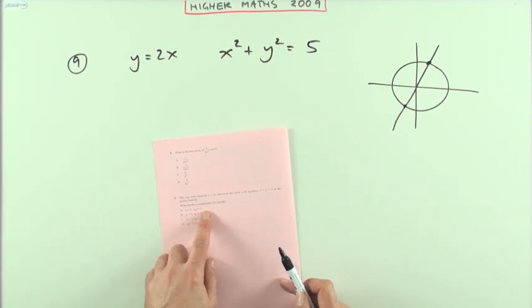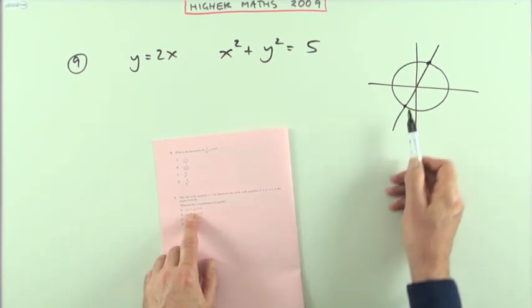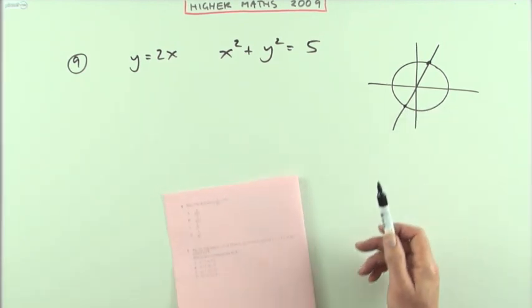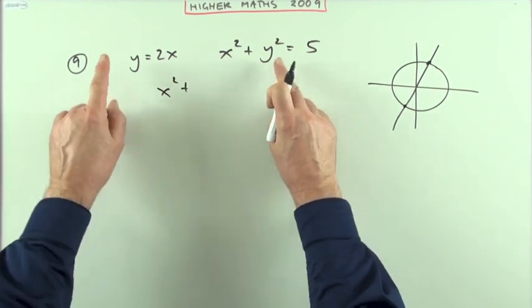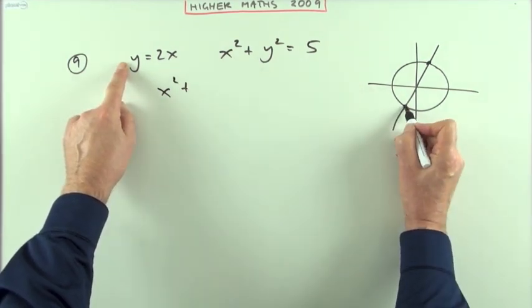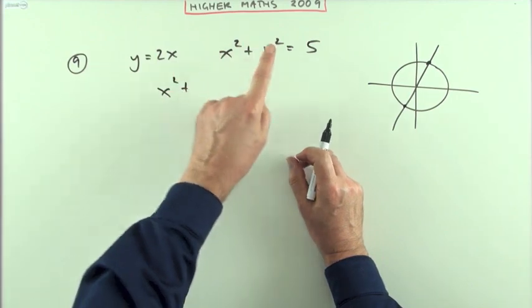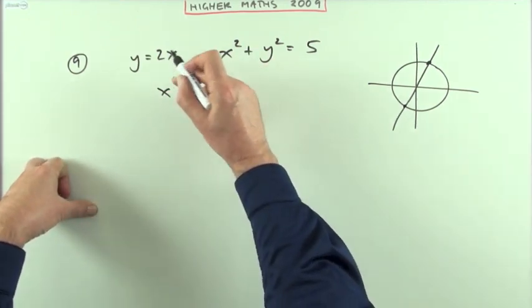Well, unfortunately, that narrows it down to either a or b. They've both got 1 and negative 1, or 2 and negative 2. So I'll just have to go through it then. So I've got, if this line cuts that circle at these points, at those points, this y coordinate must give the same answer as that y coordinate for those x's.